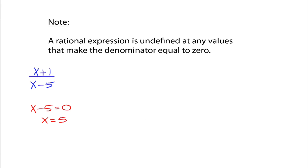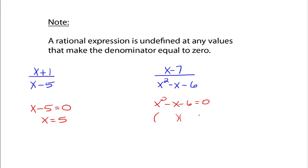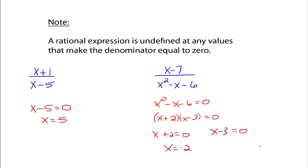What about x minus 7 over x squared minus x minus 6? This one's not so easy to see what makes the denominator 0. Take the denominator, set it equal to 0. Now we've got a little equation to solve, and we can factor the left-hand side. The factors of 6 that subtract to give 1 are 2 and 3, so we get x minus 3 and x plus 2. Setting each factor equal to 0: x plus 2 equals 0 gives x equals negative 2, and x minus 3 equals 0 gives x equals 3.